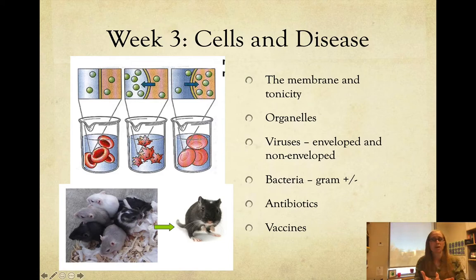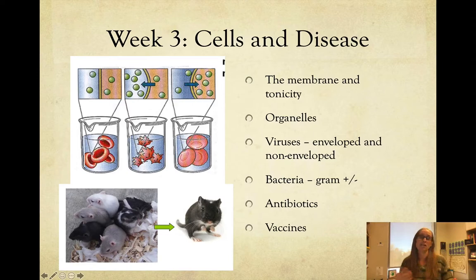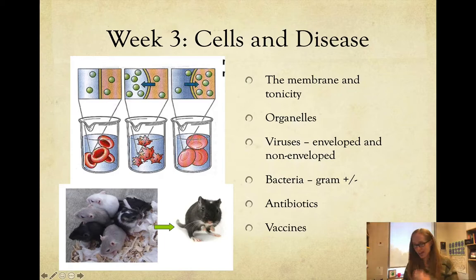Week three was cells and disease. We talked about the cell membrane, tonicity — hypertonic, hypotonic, isotonic. We talked about viruses, whether they were enveloped or non-enveloped, lysogenic versus lytic. We talked about bacteria, the different shapes and clustering of them, whether they're gram-positive or gram-negative. We talked about antibiotics, vaccines, and you did the dead gerbil activity.